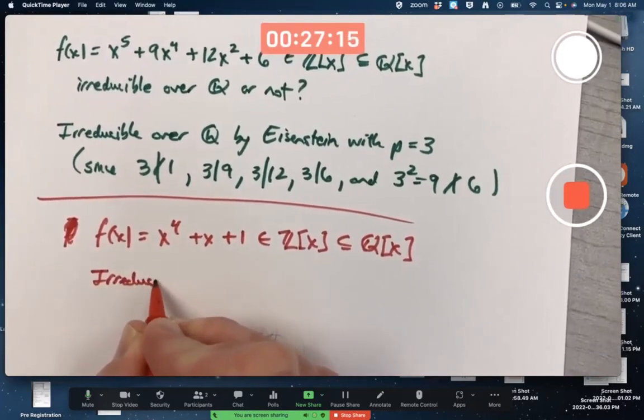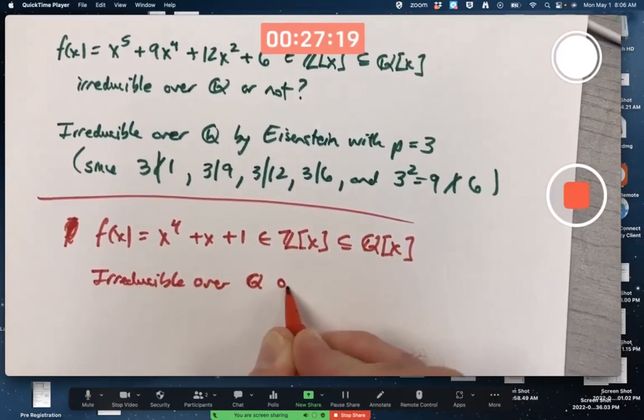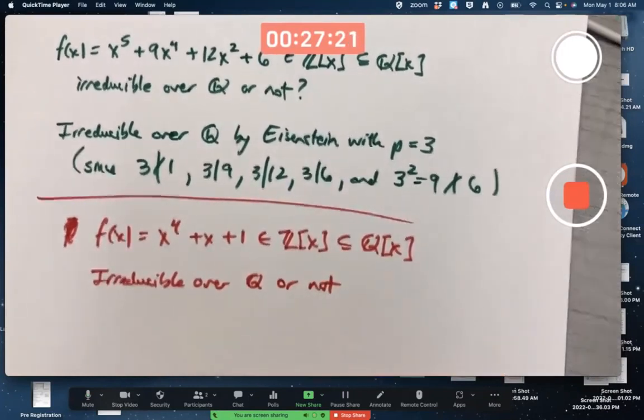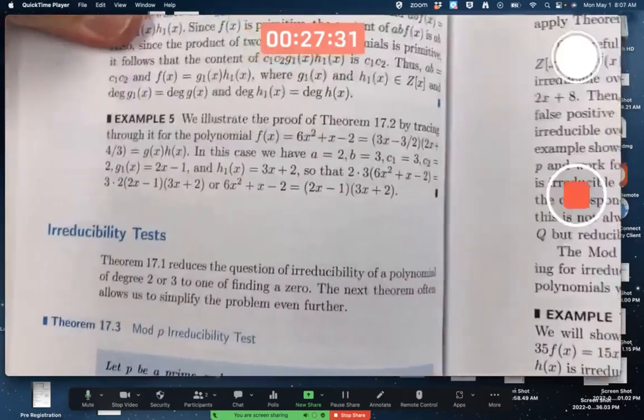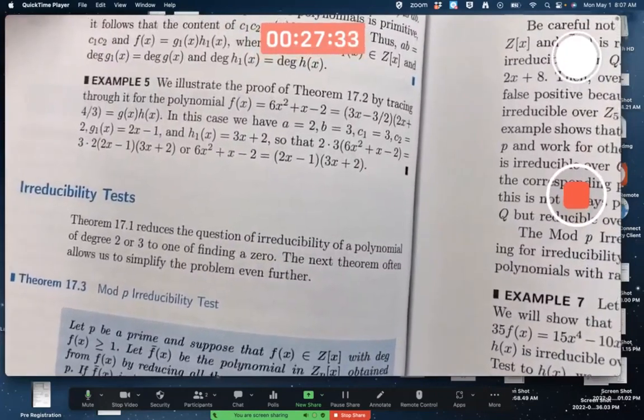Irreducible over the rationals or not. You can't apply Eisenstein's criterion directly, but we can always try this mod p irreducibility test. And it is an irreducibility test, not a reducibility test.